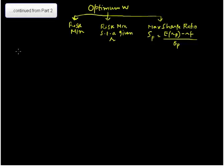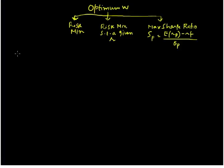Hello everyone. In the previous videos, we have focused on risk minimization and Sharpe ratio maximization for a two-asset portfolio. In this video, we are going to conclude our discussion on optimum portfolio weights by considering a portfolio of N assets and arriving at a vector of optimum portfolio weights for a portfolio of N assets.